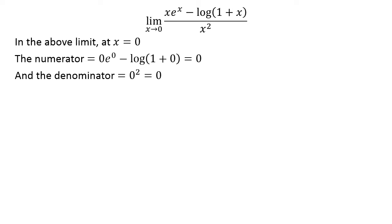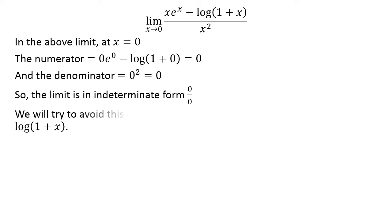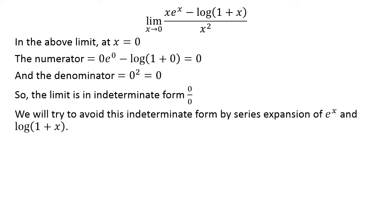In the above limit, as x is equal to 0, the numerator is equal to 0 and also the denominator is equal to 0. This implies that the limit is in the 0 upon 0 indeterminate form.